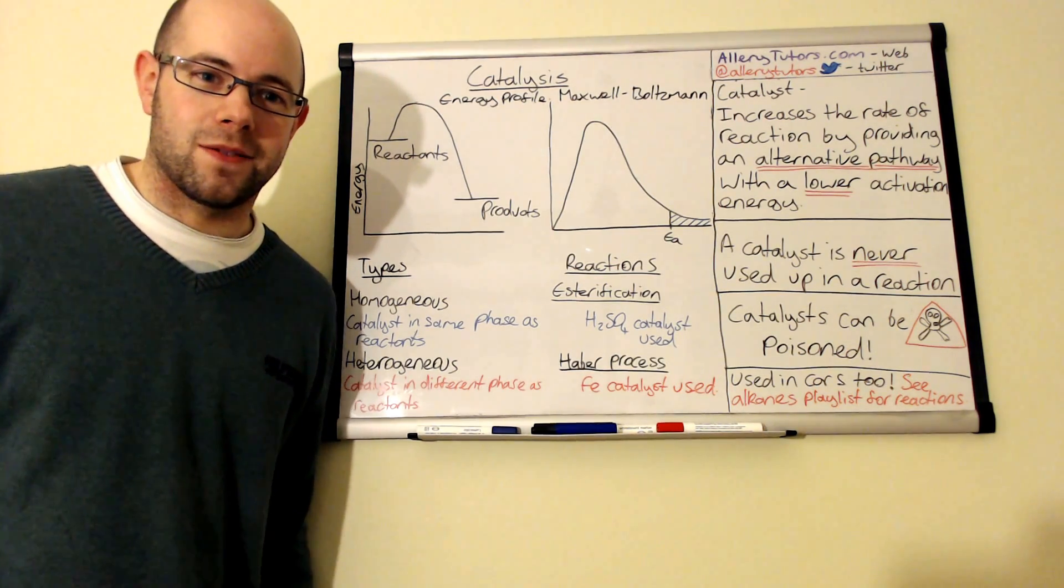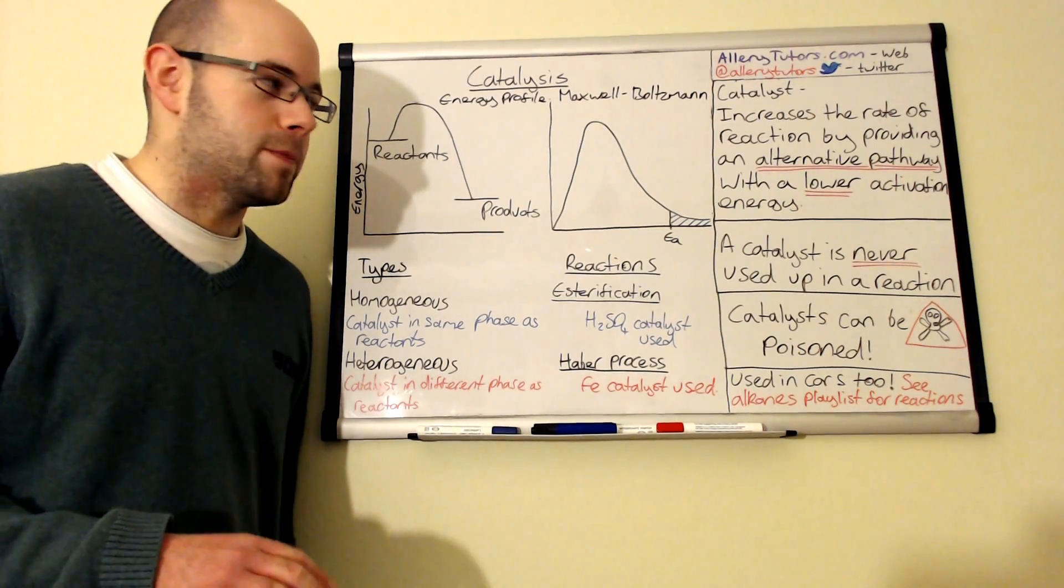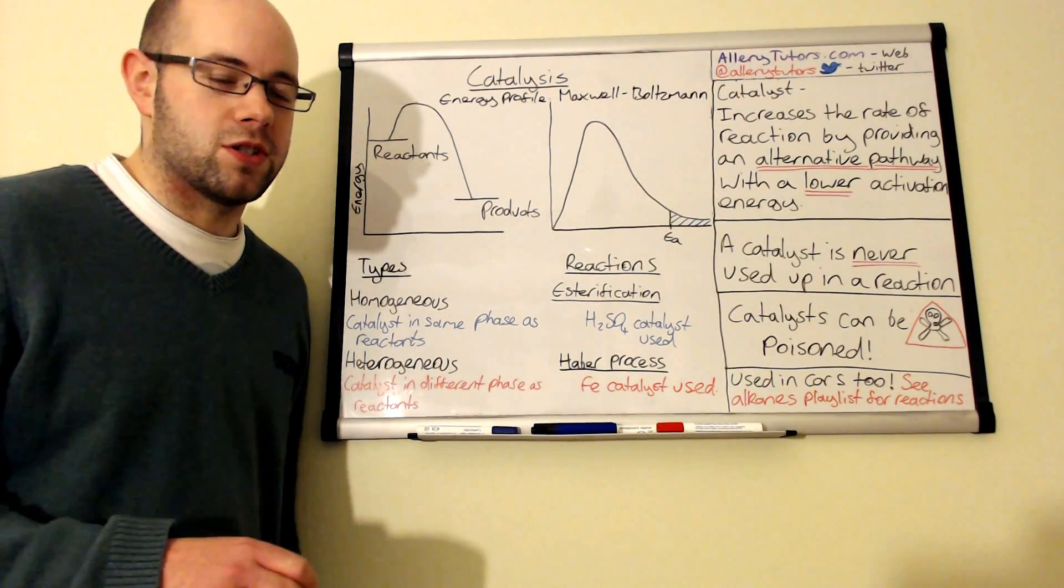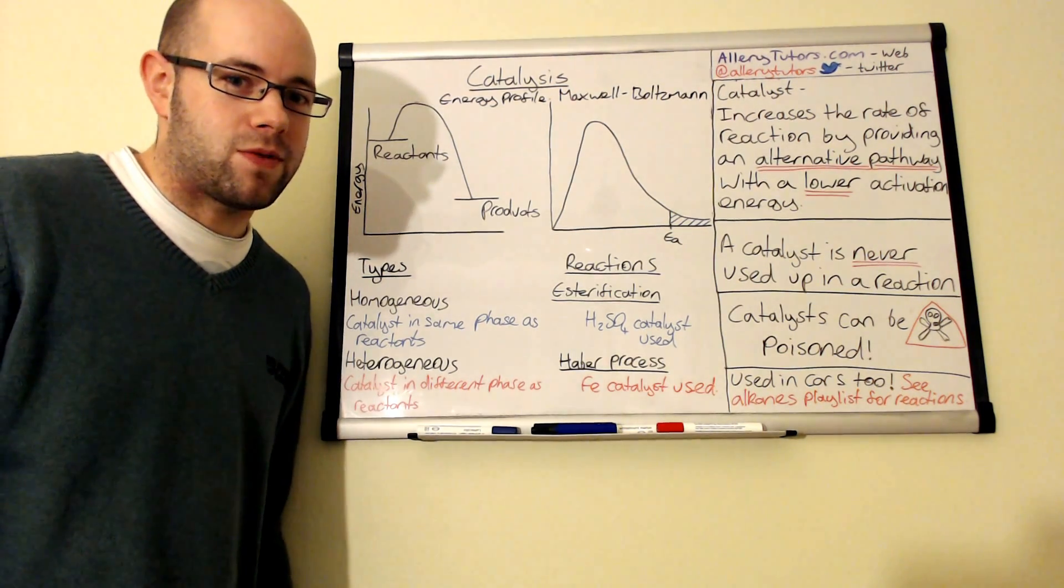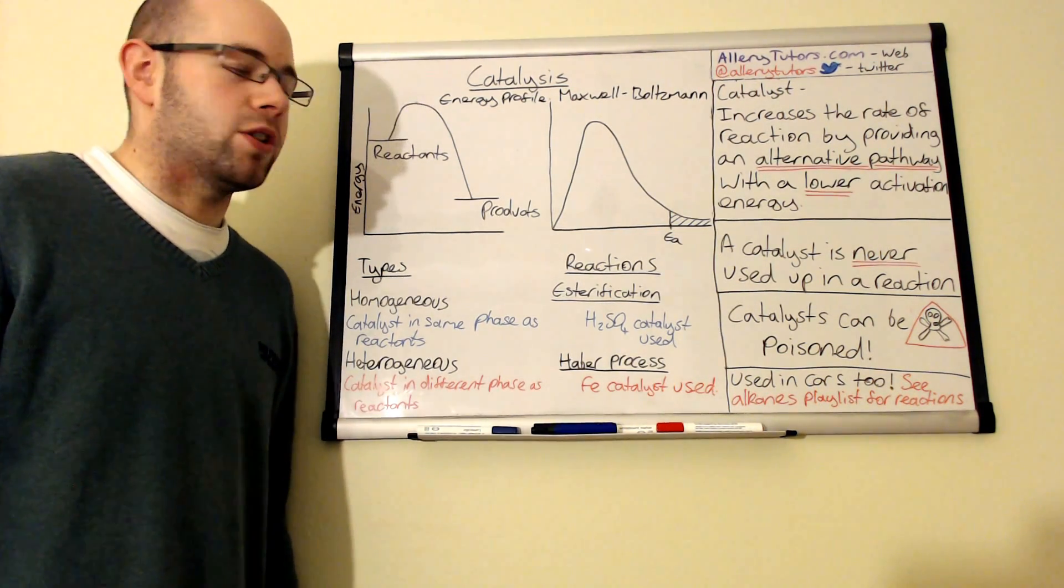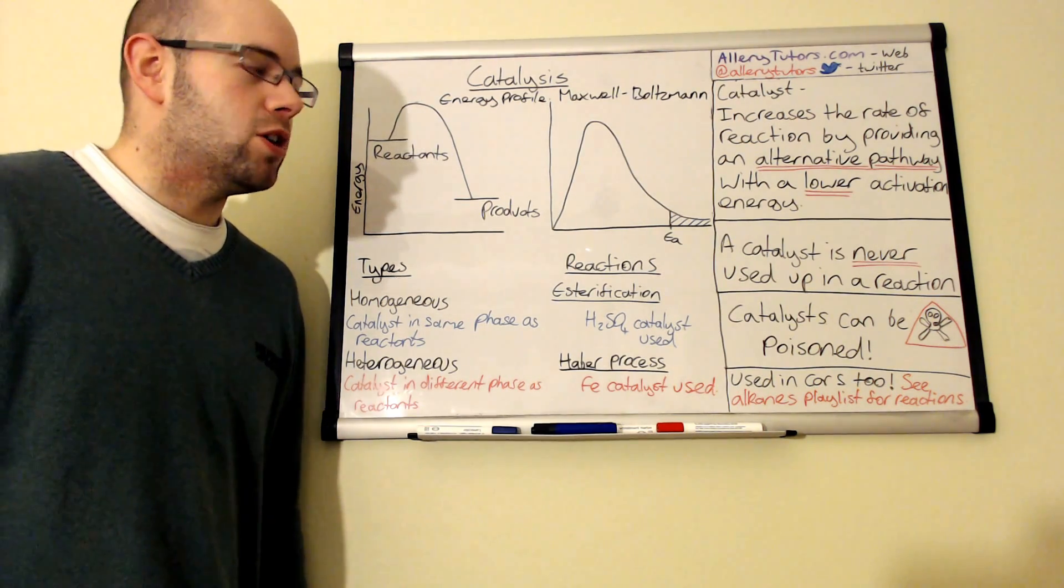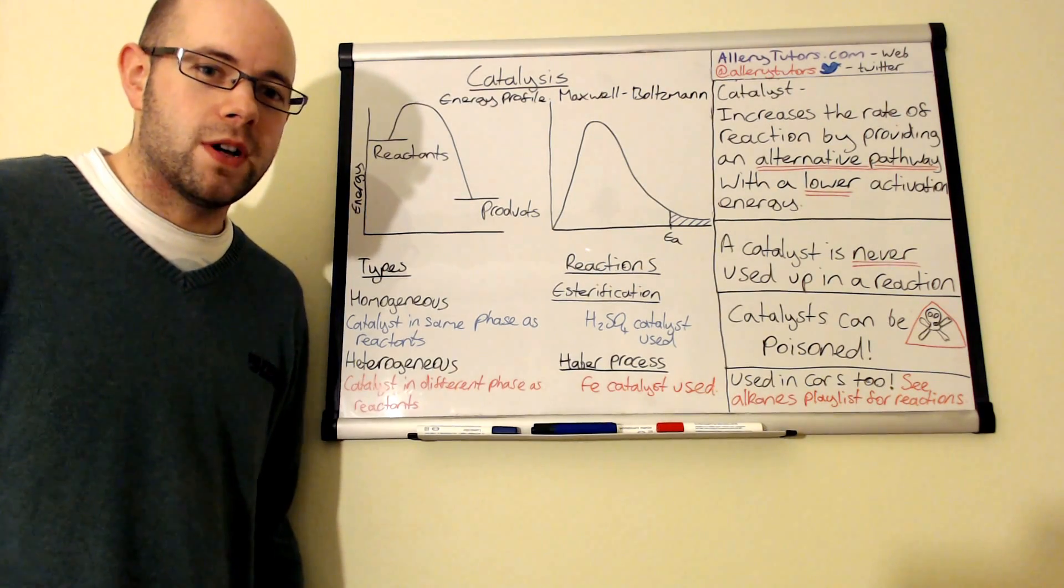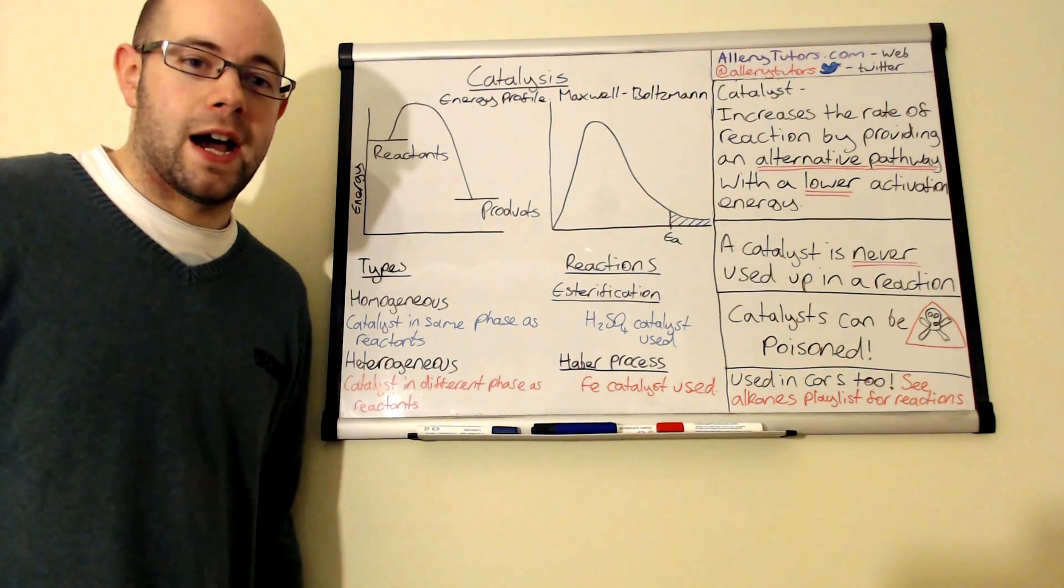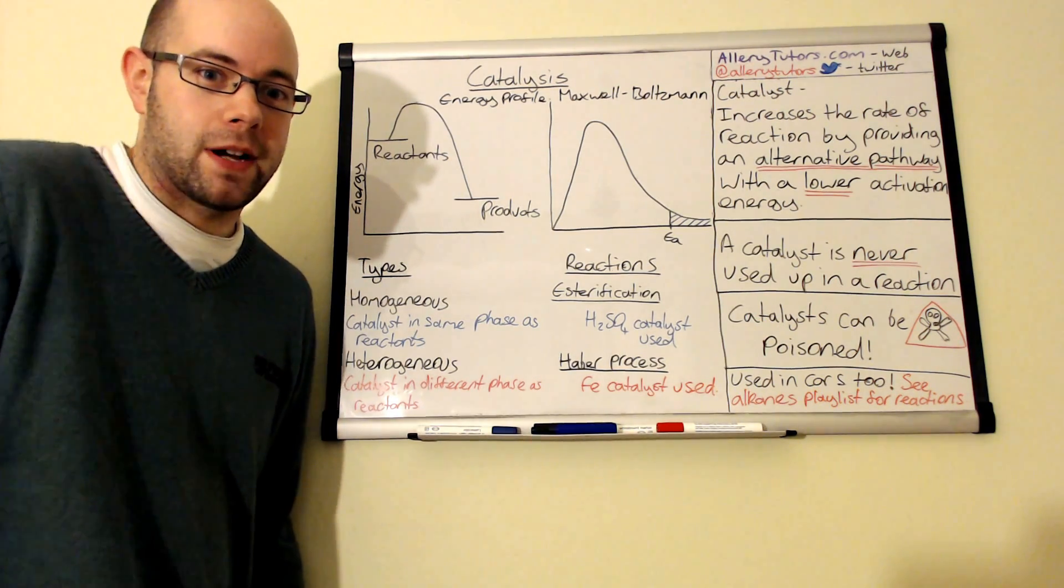The best place to start is what a catalyst is. The definition is crucial—you really need to know what a catalyst is. A catalyst is something that will increase the rate of reaction by producing an alternative pathway with a lower activation energy. It's really important that you know about the activation energy part, because that's primarily how a catalyst works.